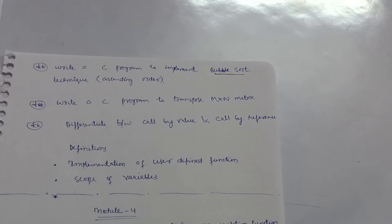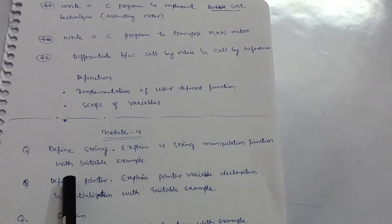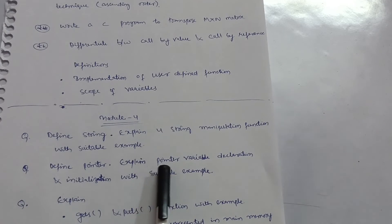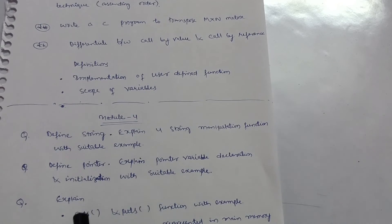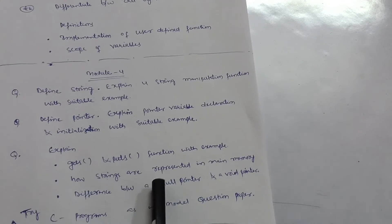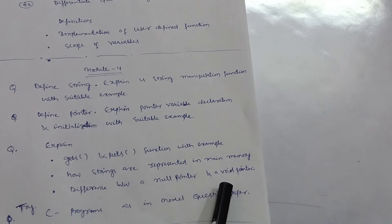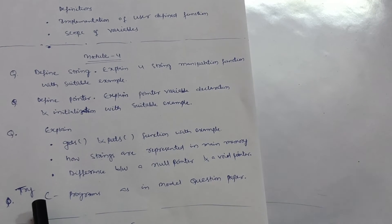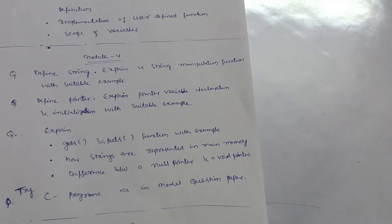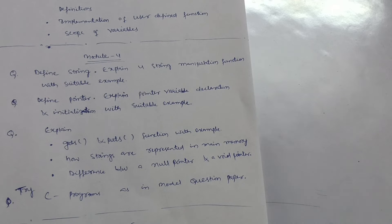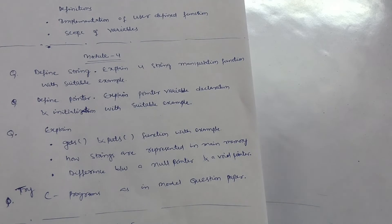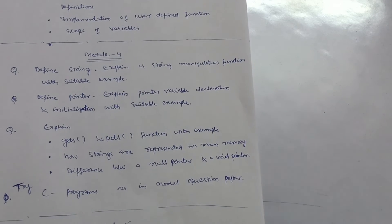From Module 4, you can choose some important questions. First, define strings and explain string manipulation functions with suitable examples. Next, define a pointer and explain pointer variable declaration and initialization with suitable examples. Also cover the getch and putch functions with examples, how strings are represented in memory, and differentiate between a null pointer and a void pointer. There are programs in the model question paper you can go through as well — if you don't know a theory question from Module 4, a program may help.